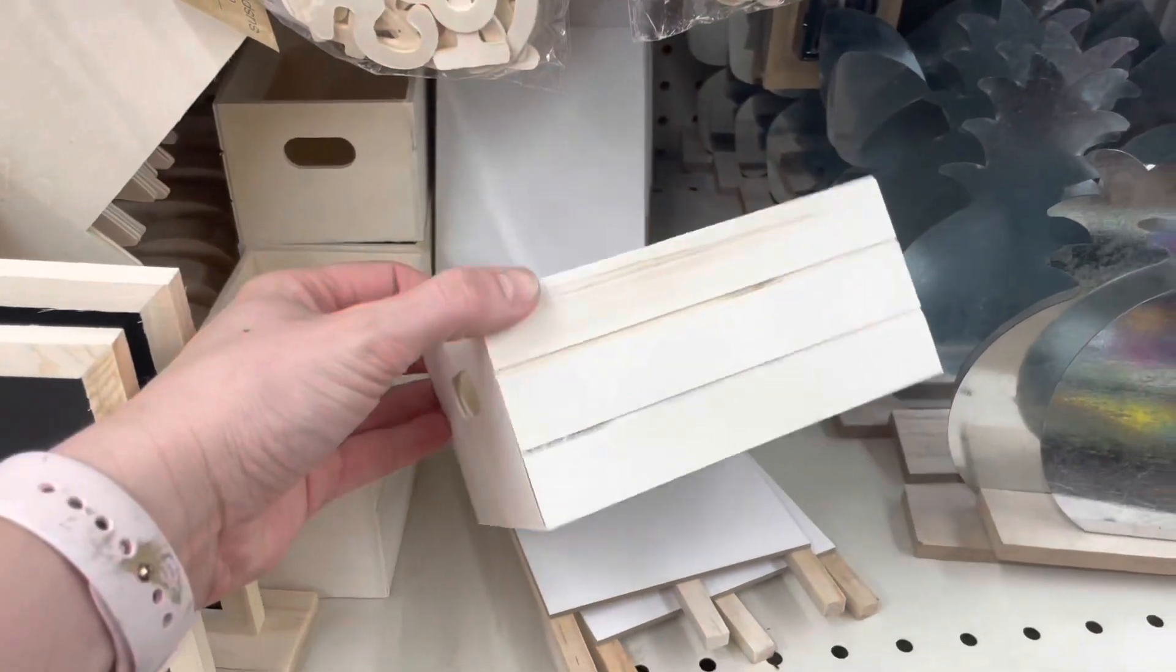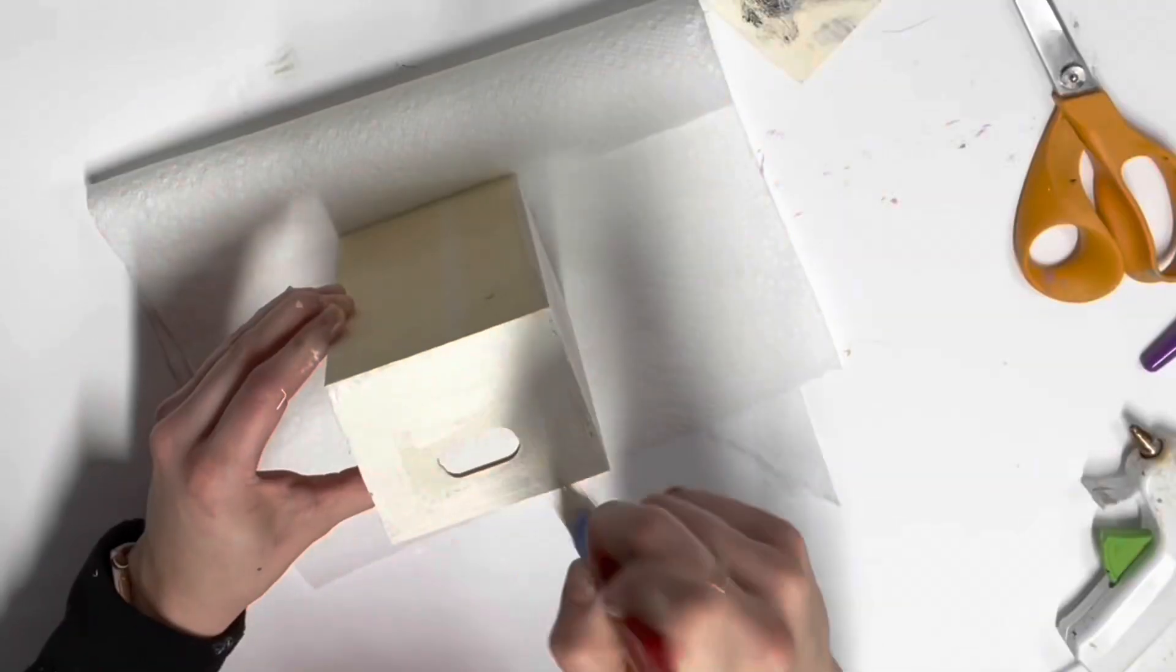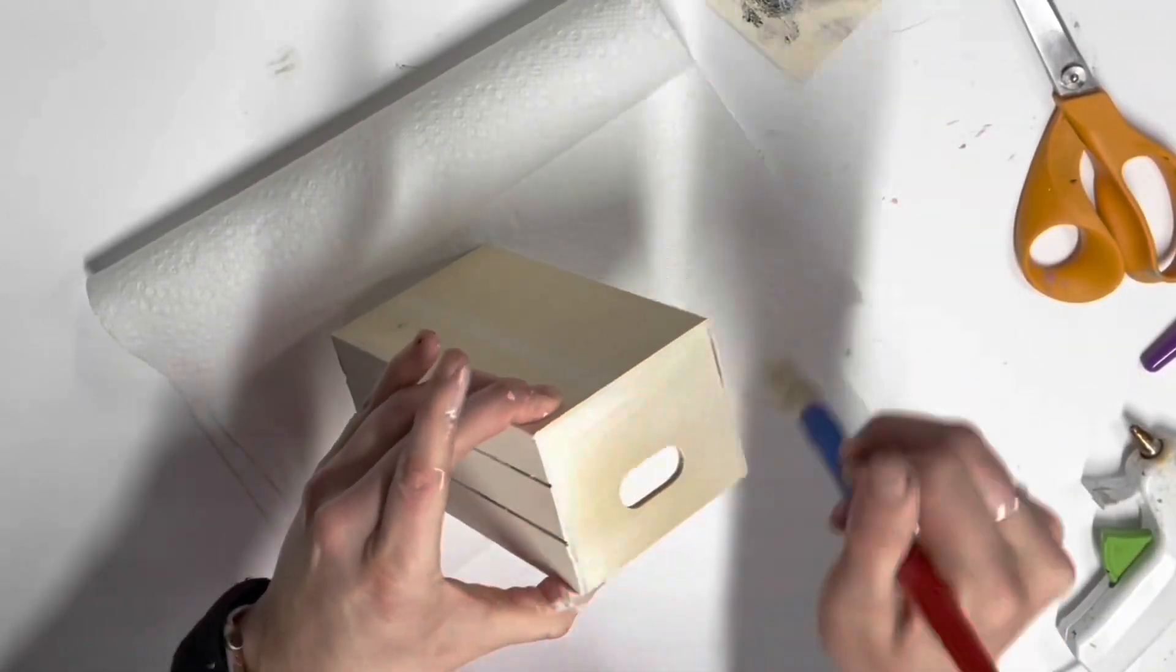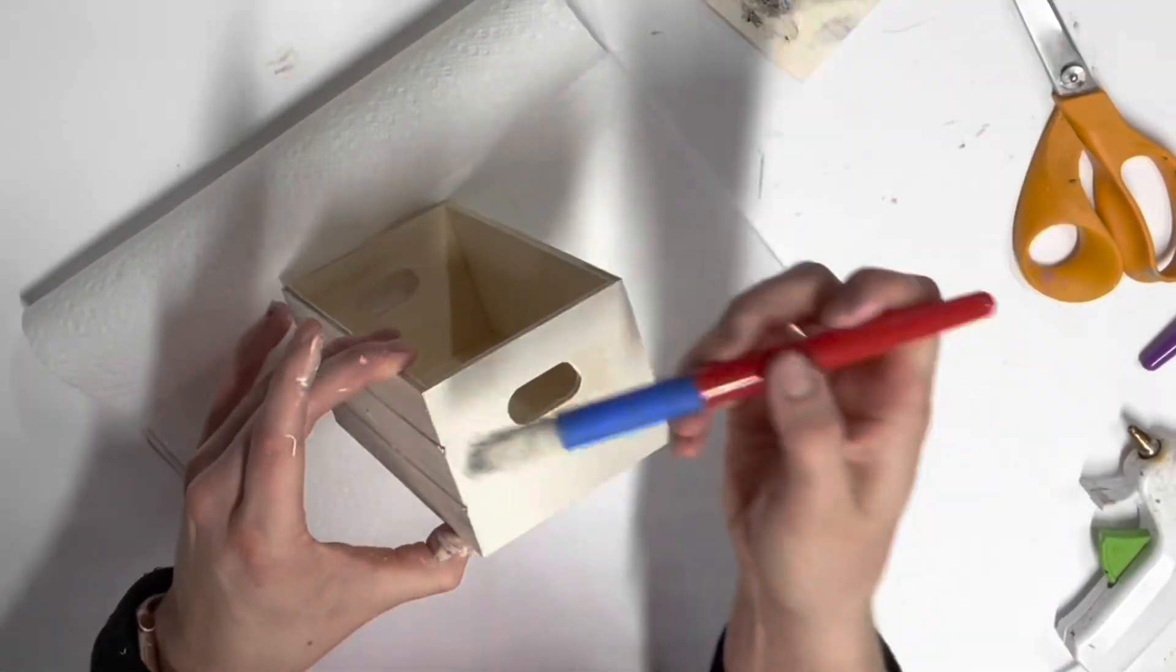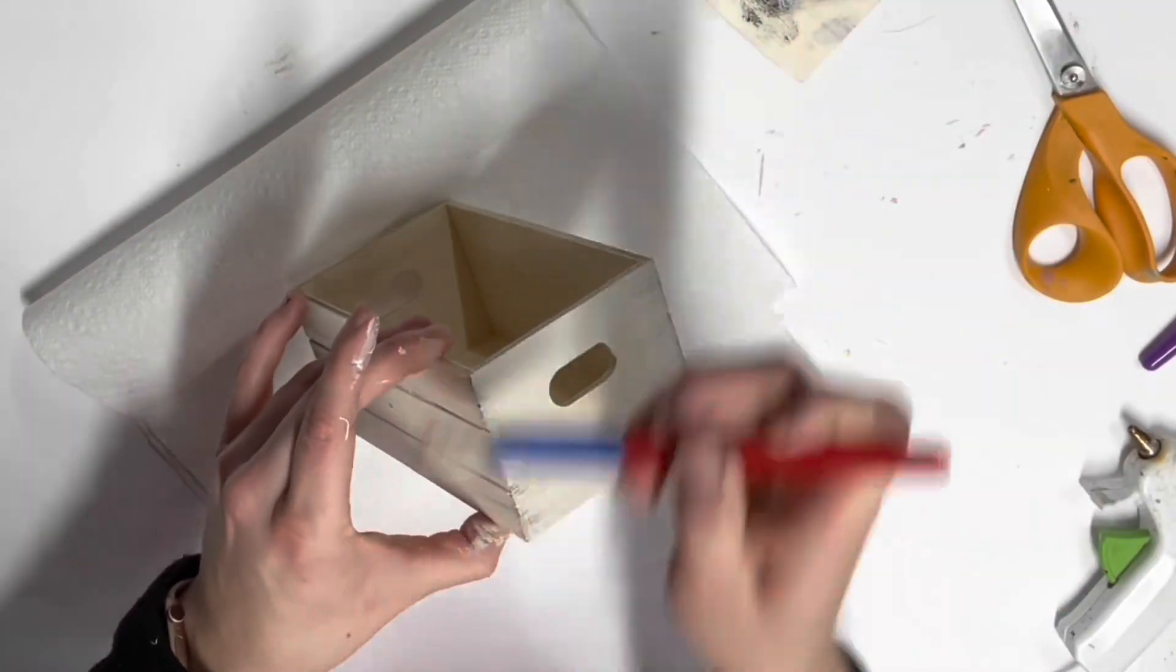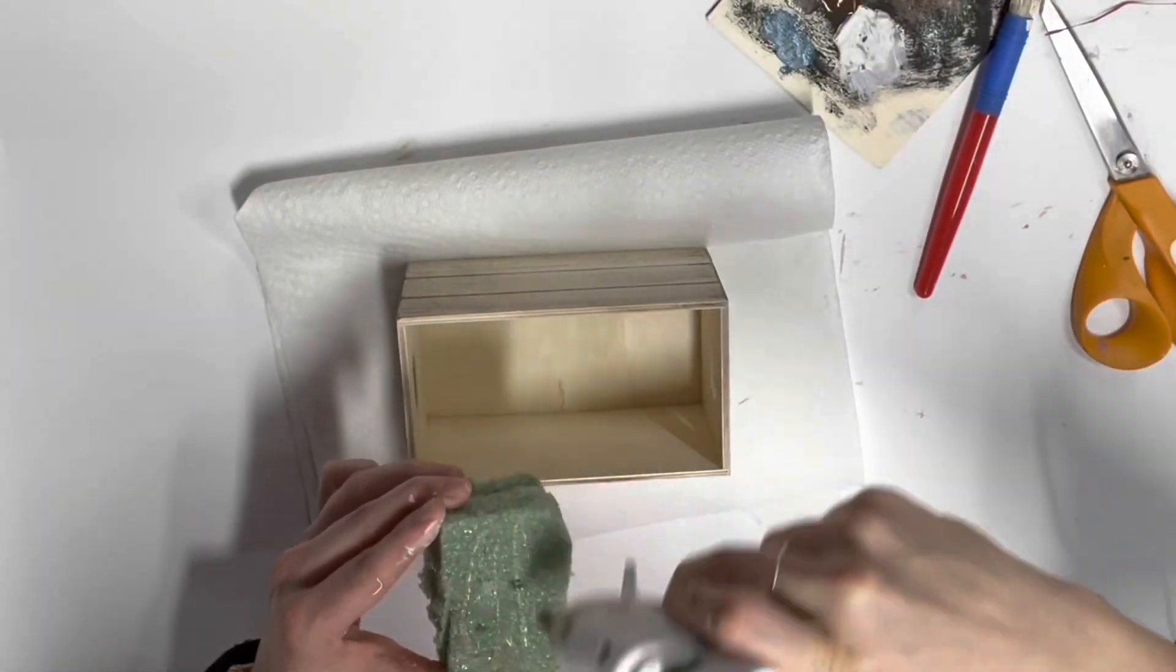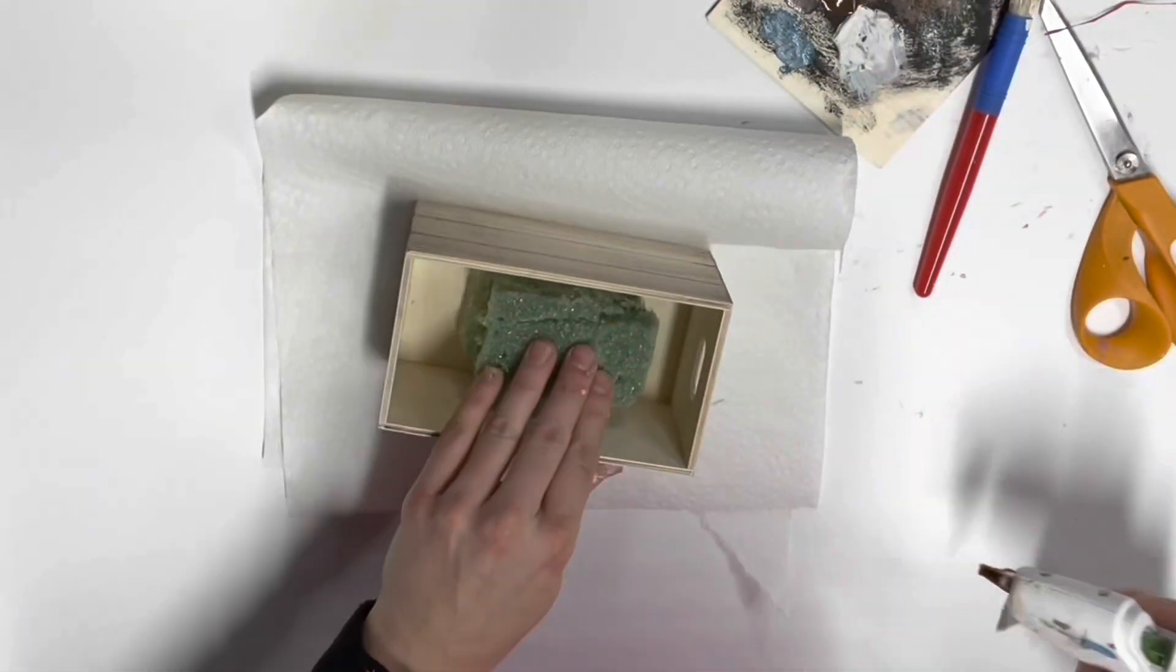And then I found these little wooden crates at Dollar Tree. I finally found this kind. I've never seen these ones. I've only ever found the ones with like the gaps in the middle. And I wanted to make the trend where people make the little book stack looking thing. So that's what I'm doing here. Okay, wait, no, this one is a little flower arrangement. Sorry. The book stack is next.